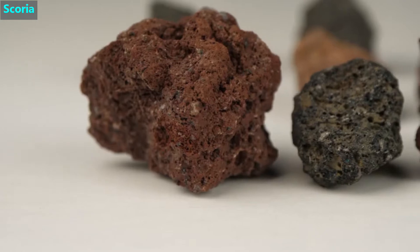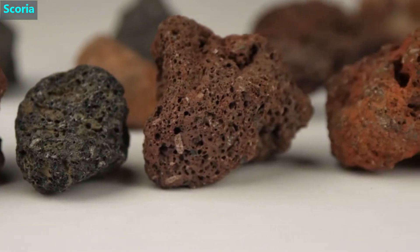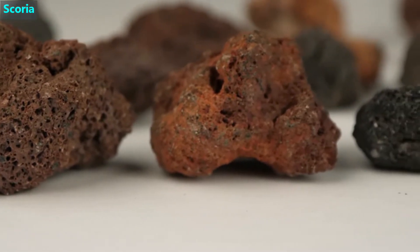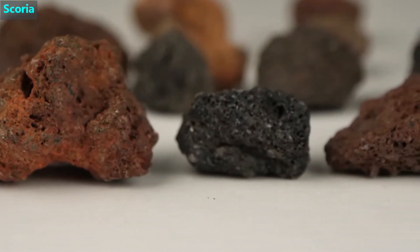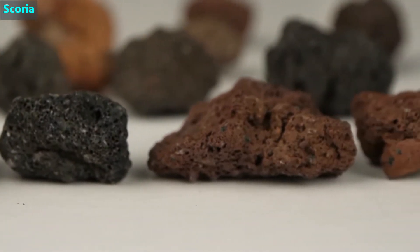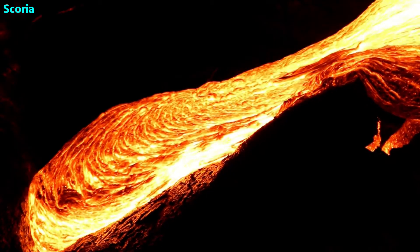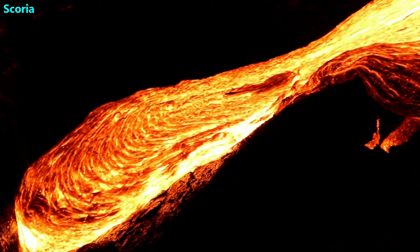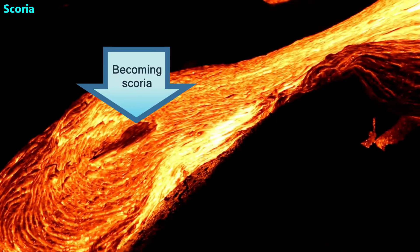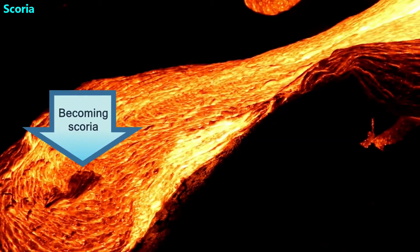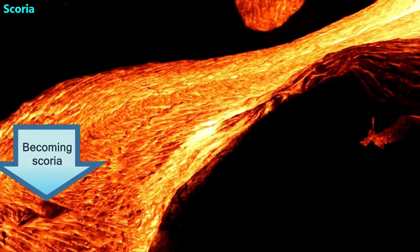The next igneous rock is called scoria, sometimes called lava rocks. It also has tiny holes where bubbles of gas were trapped. You may have seen this as a filler around trees or the edges of buildings. Like pumice, scoria is also formed from lava, but it takes a little longer to cool down than pumice does. This rock may be made at the surface of lava flows.